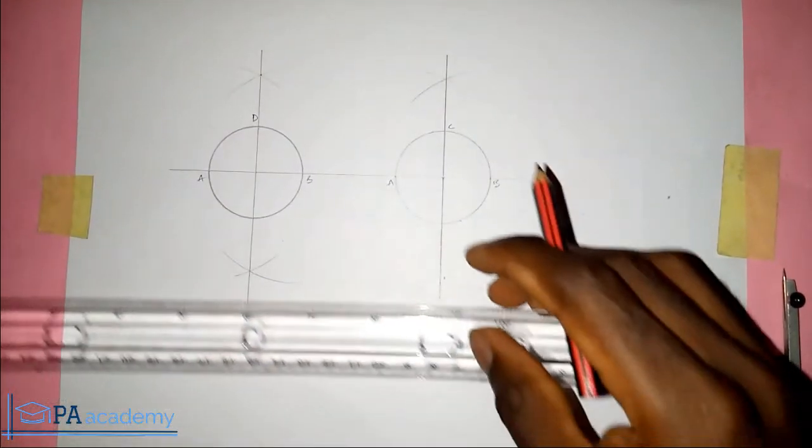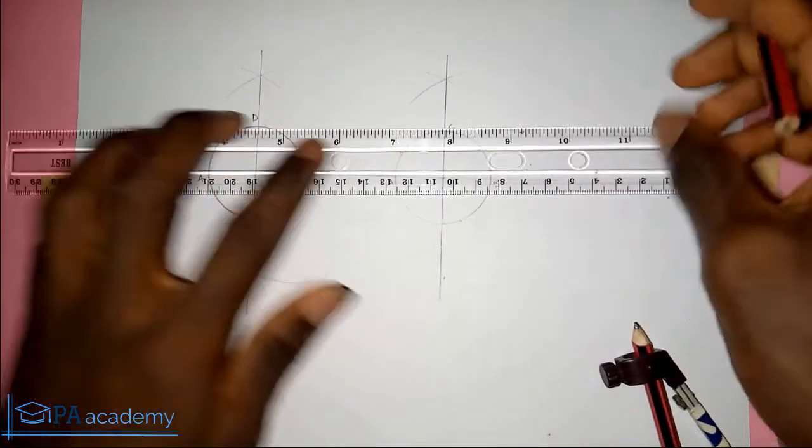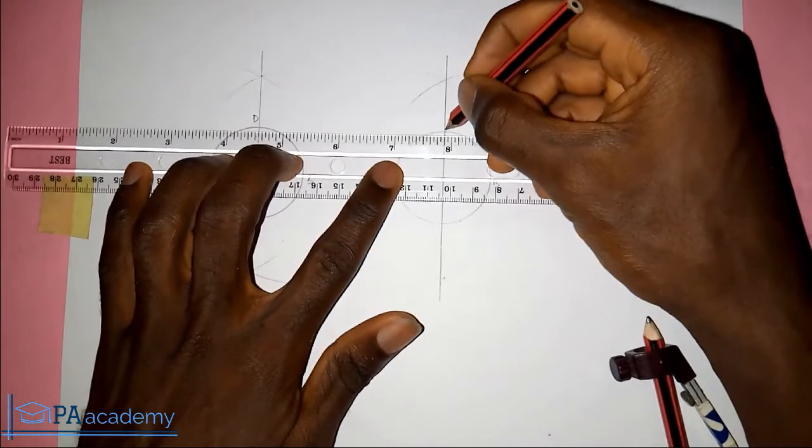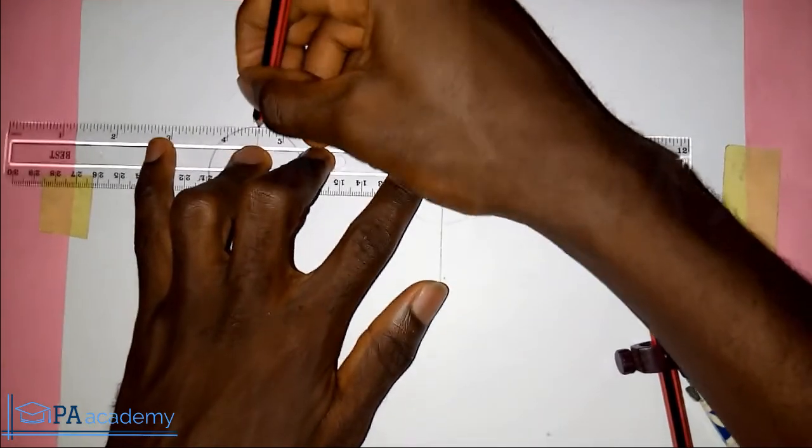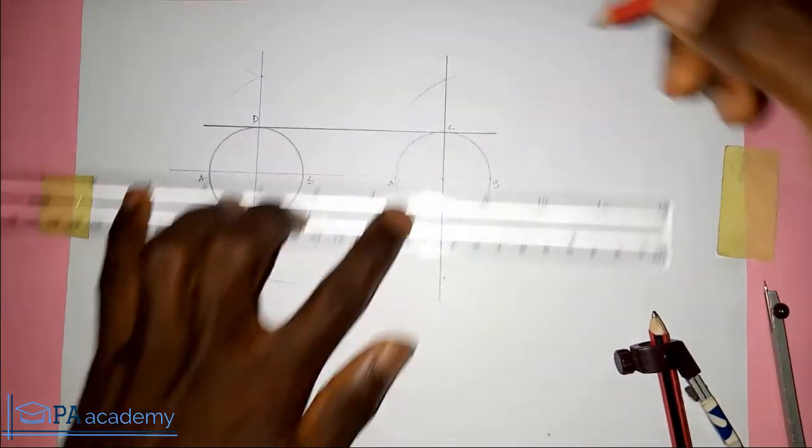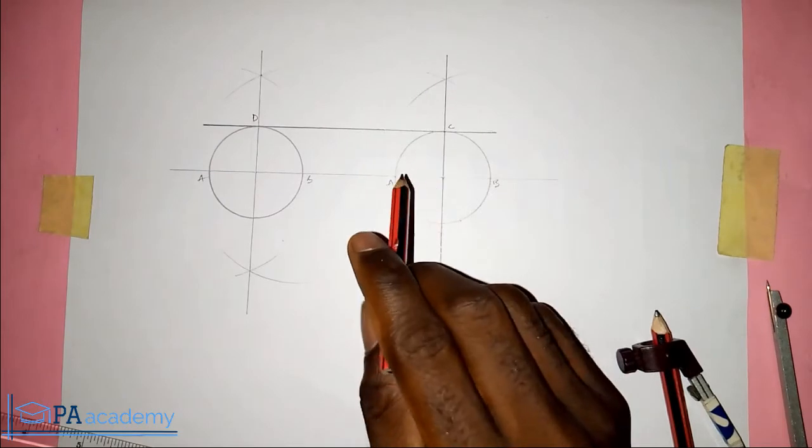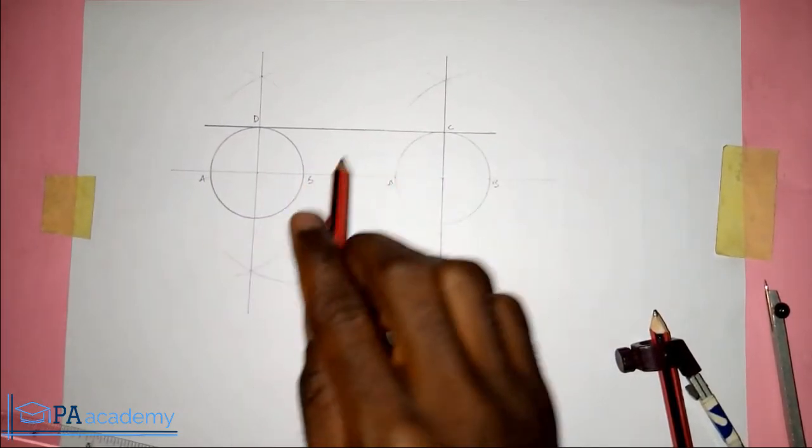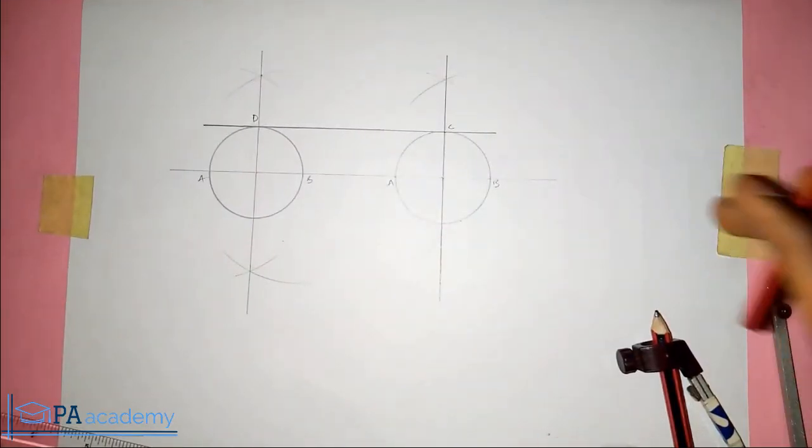Now what you are going to do next is to draw a line from this point C to point D. Now that line that we are drawing is the tangent. So this line that we've just drawn is the tangent to these circles, the external tangent to these equal circles. This is how you go about drawing a common tangent to two equal circles.